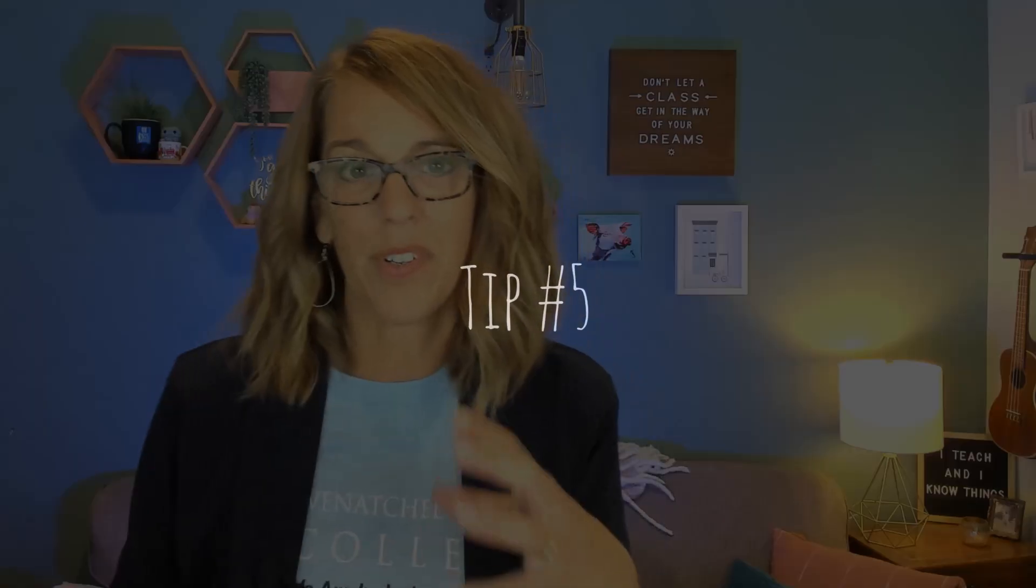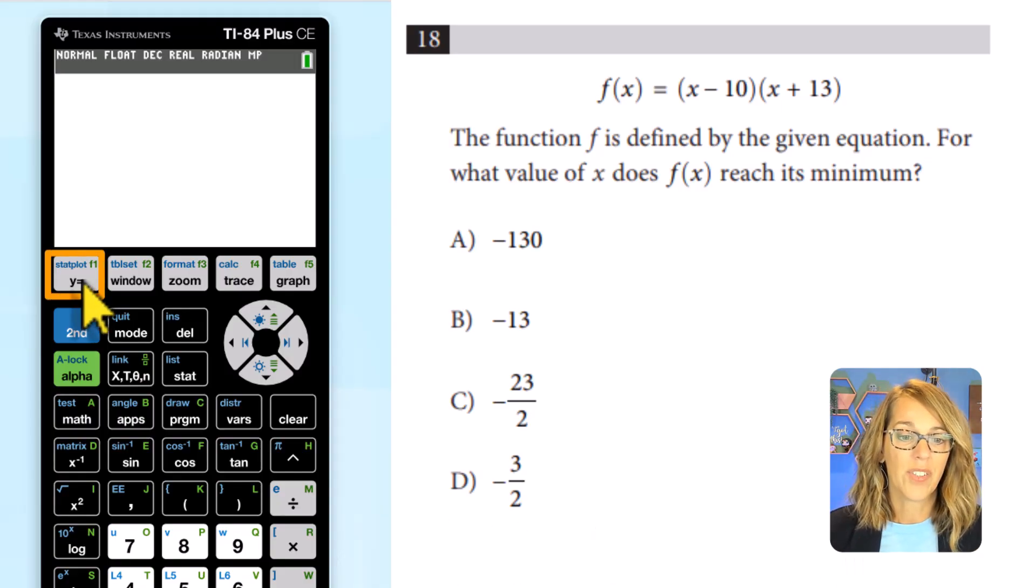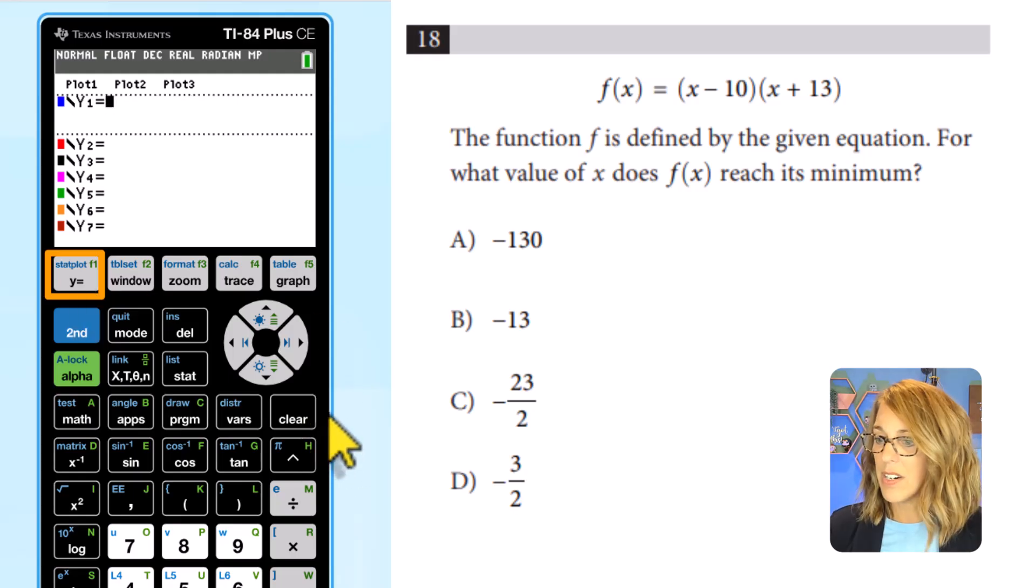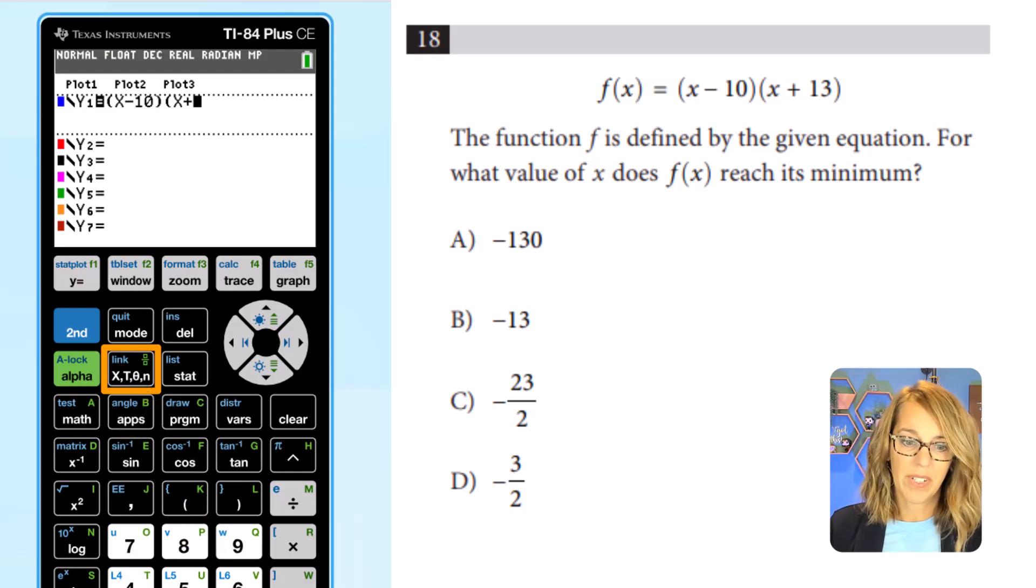I want to show you how being an expert with the calculators graphing tools can help you solve questions like this. This one, it says, for what values of x does f of x reach its minimum? I'm just going to graph this one. And I'm actually going to graph it and then ask the calculator to find the minimum for me. So I'm going to go to my y equals screen. I'm going to hit clear. And then instead of y, I've got an f of x, but that's fine. Let's use our parentheses above number eight, our variable key to type in x minus 10. Close that parenthesis. Open up the next parenthesis. And we want variable x plus 13. Close the parenthesis. I am going to graph this one. Let me hit graph.